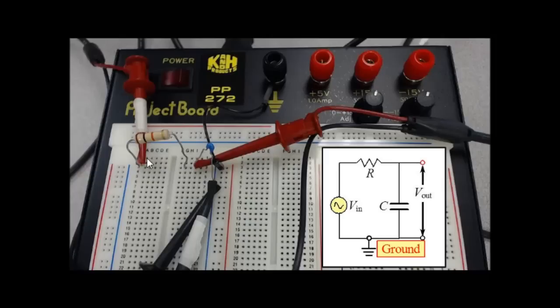Here's a low-pass filter actually built on our breadboard. The first thing I want to show you is that this is pretty simple. Look, here's one resistor and one capacitor, which is exactly what we see over here in the diagram.